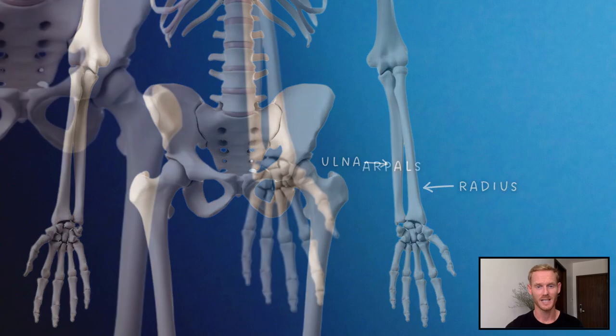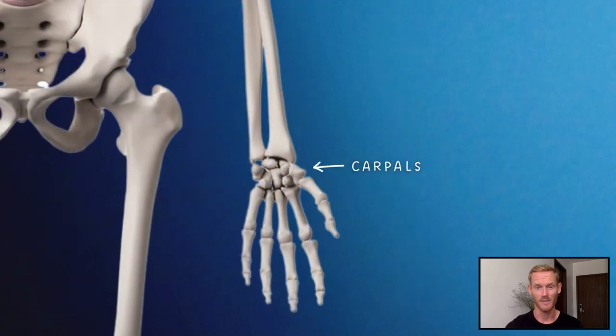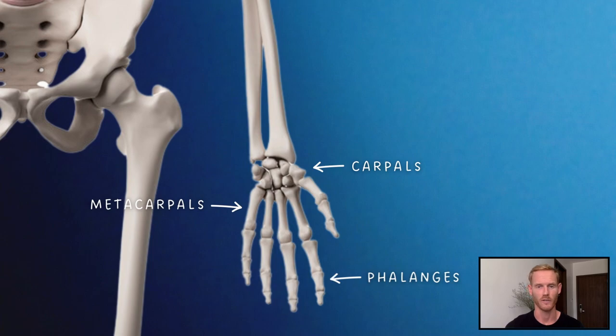Moving down to the hand, we have the carpals at the top, metacarpals in the middle, and then the phalanges, or finger bones.